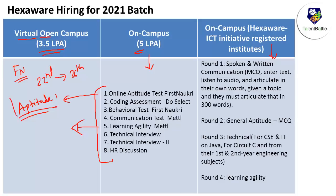Those who have got an on-campus drive or are in a Hexaware ICT-type college will get detailed information from their Training and Placement Officer — process, dates, how to apply, everything. Don't worry; you can prepare according to whichever pattern applies to your institute. For those who have applied through the virtual open campus drive and got slot booking details, I recommend focusing on aptitude for the first round, and after that round you will get details about the next.